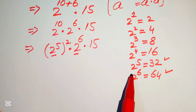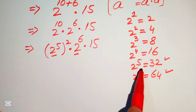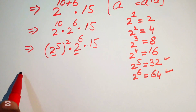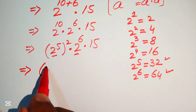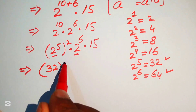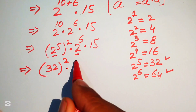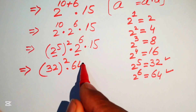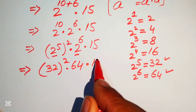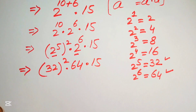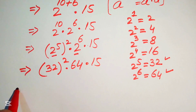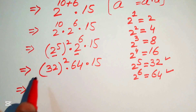Substituting these values: 2 to the power of 5 equals 32, so we have 32 squared. And 2 to the power of 6 equals 64. So our expression becomes 32 squared multiplied by 64, multiplied by 15.